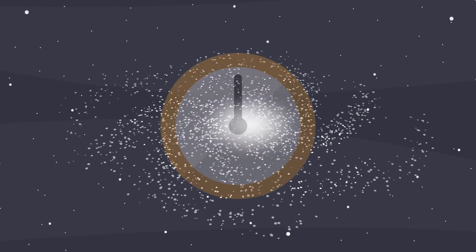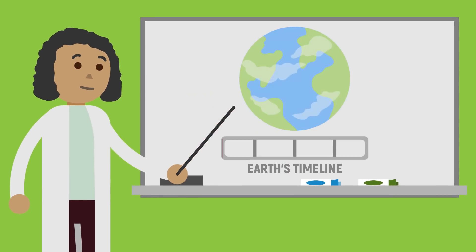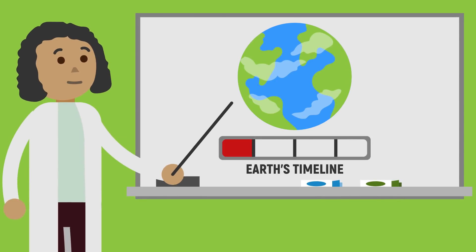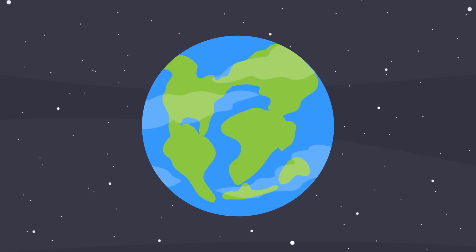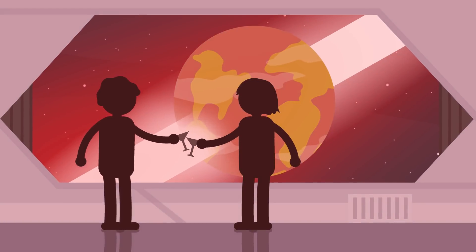A billion years can seem like an unfathomable amount of time. That's a thousand million years, or about a quarter of the total time the Earth has even existed. It's hard to imagine what our little planet will look like in a billion years, but we're going to go ahead and make some educated guesses.